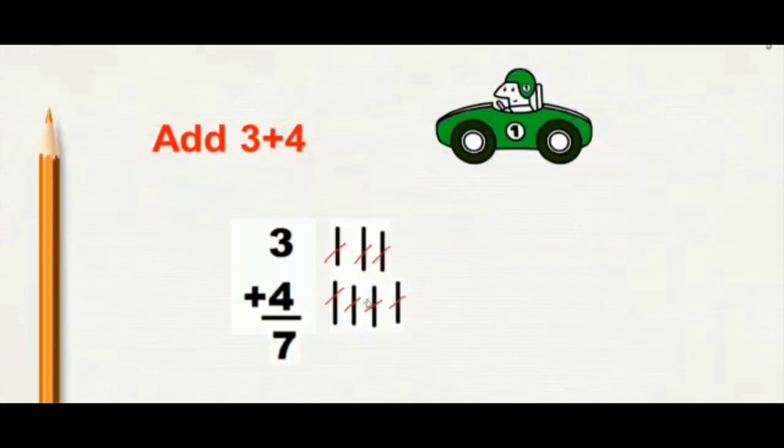So, 3 plus 4 will be 7. This is how we add the numbers by drawing lines.